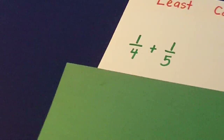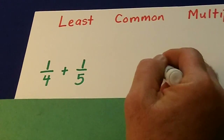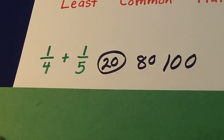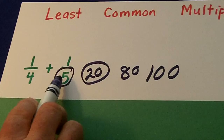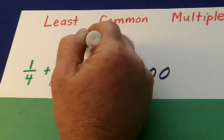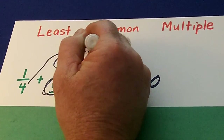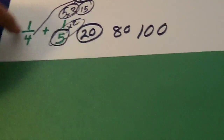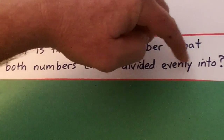Now let's quickly go over least common multiple. 4 and 5 — what is the smallest number that 4 and 5 go into? They both can go into 100, they both can go into 80, but it's 20 that they go into. You take the biggest number and then ask: can the little number go into the bigger? No. Times it by 2 — can 4 go into 10? No. Times it by 3 — what's 5 times 3? 15. Can 4 go into that? No. Then 5 times 4 is 20 — can 4 go into 20? Yes. 20 is the lowest common multiple, which is the same as the lowest common denominator.